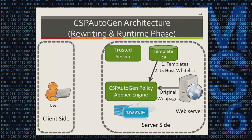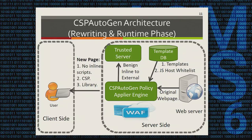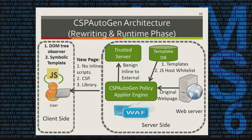In the rewriting phase, CSP Autogen has three components. First, the policy apply engine runs on top of the site's web application firewall. It intercepts all outgoing web pages and fetches the templates and JavaScript host whitelist from the template database trained in the training phase. It then rewrites each web page by extracting all inline scripts, finding the benign ones, and uploading those benign scripts to a trusted server. Each website is associated with one trusted server. After that, it generates a content security policy including the JavaScript host whitelist and the trusted server. The client-side library then uses two techniques — DOMTreeObserver and SymbolicTemplate — to properly handle all JavaScript generated during client-side execution.